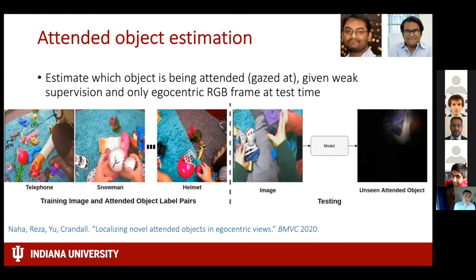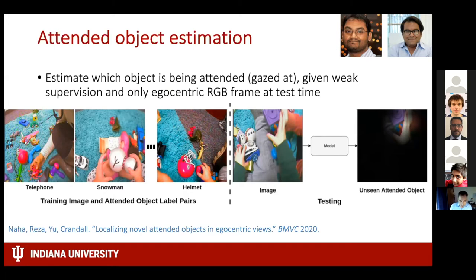Building on this, we looked at not just identifying the precise gaze XY coordinate, but estimating which object in the field of view is being attended to, since people think in terms of objects rather than coordinates. This project by Shuja Nahan and a postdoc Reza investigated whether, given only weak supervision — egocentric frames and a label indicating which object the person was looking at — the system could automatically learn a model to identify not only where the person was looking but also the identity of the attended object. That work appeared at BMVC.